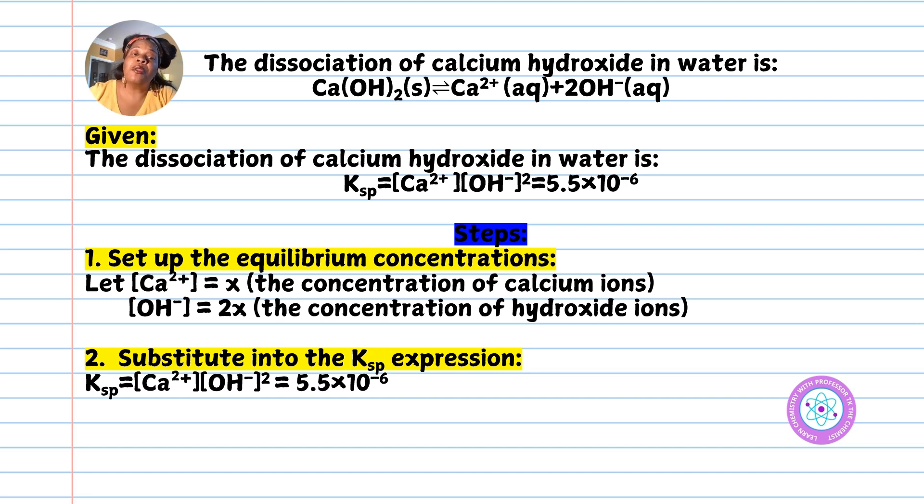Now, what do we do with that number? First, we set up the equilibrium concentrations. We let [Ca²⁺] = x for the calcium ion concentration. We let [OH⁻] = 2x, twice the concentration of hydroxide ions.